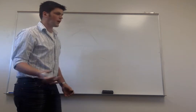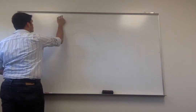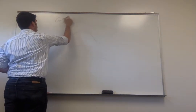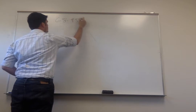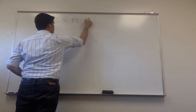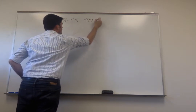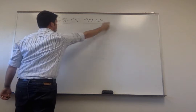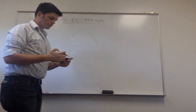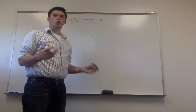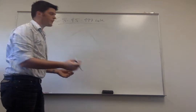We're going to learn about a rule in statistics called the 68-95-99.7 rule. This rule deals with normal distribution, or normally distributed data.